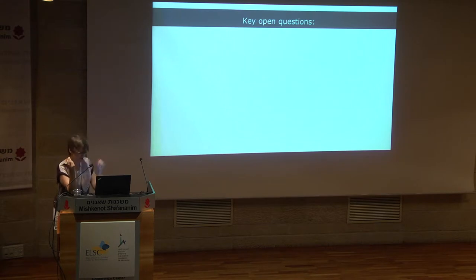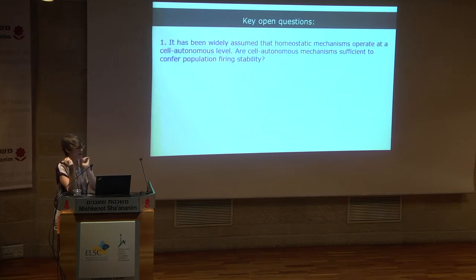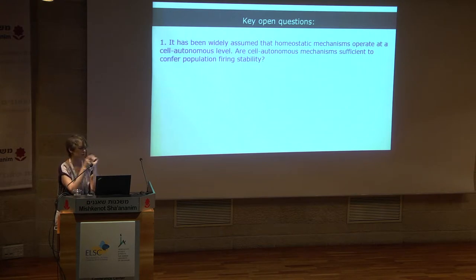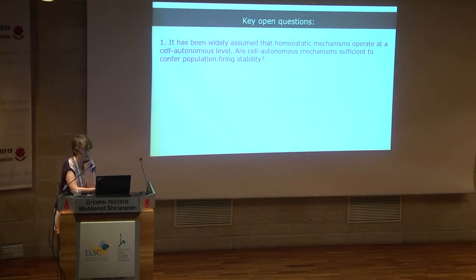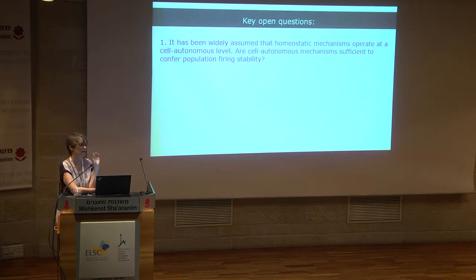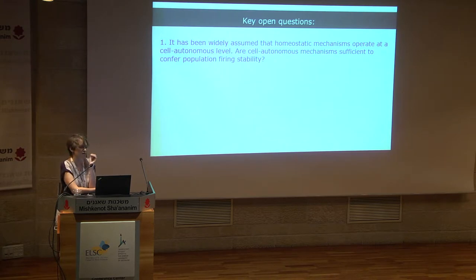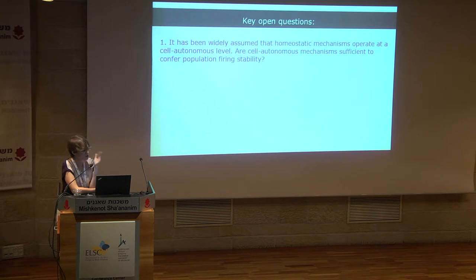However, despite all these beautiful results, some very elementary questions remained open. If you read books or reviews, you will find it widely assumed that homeostatic mechanisms operate at the cell-autonomous level — meaning each neuron has an ability to detect deviation from its own firing rate and fix itself. The question we ask is: are cell-autonomous mechanisms sufficient to confer population firing instability?